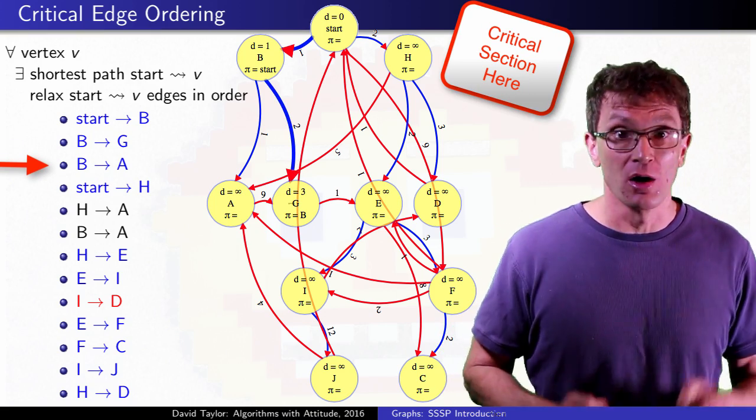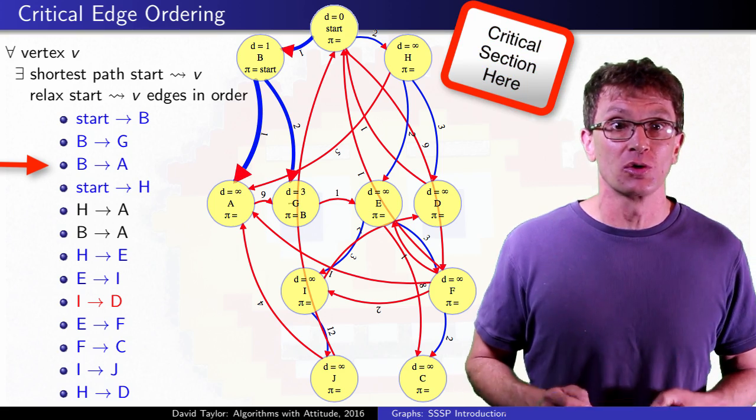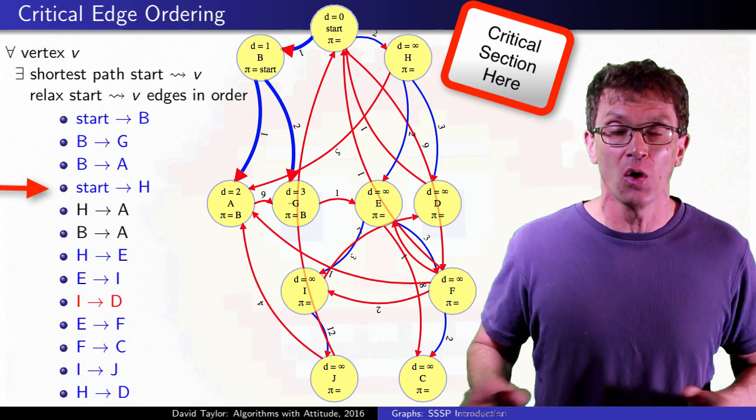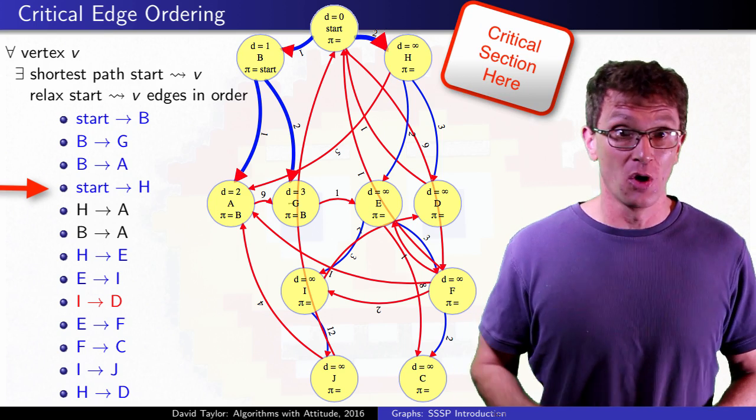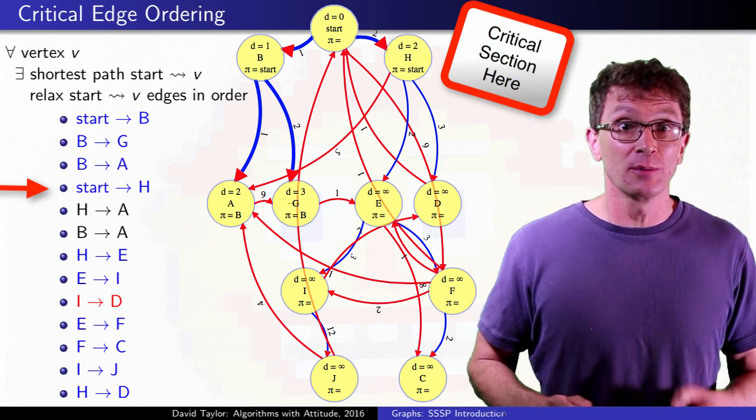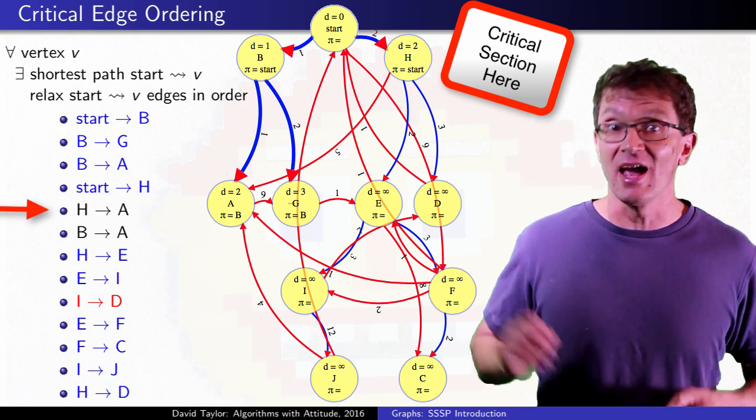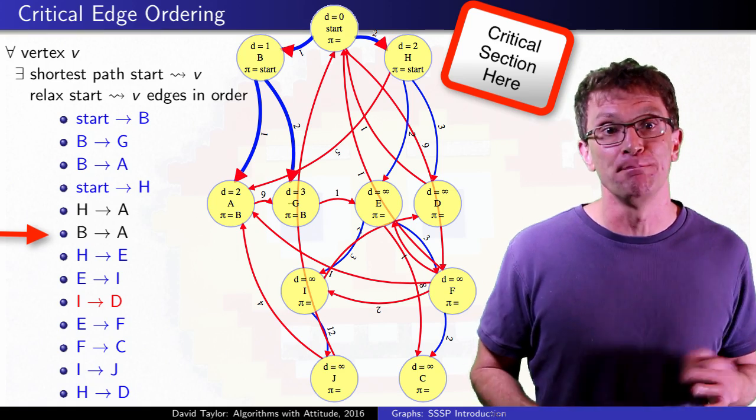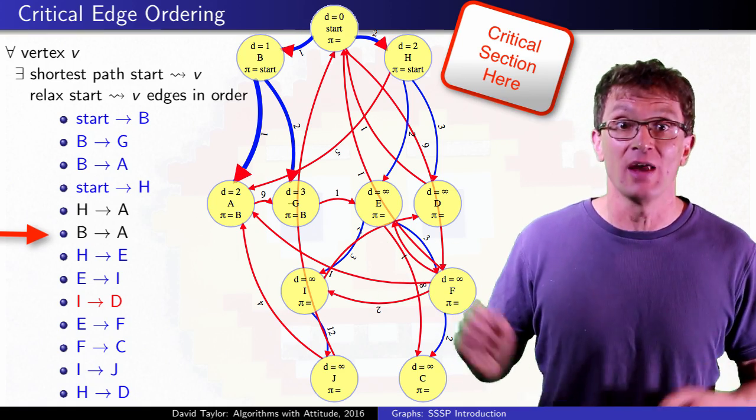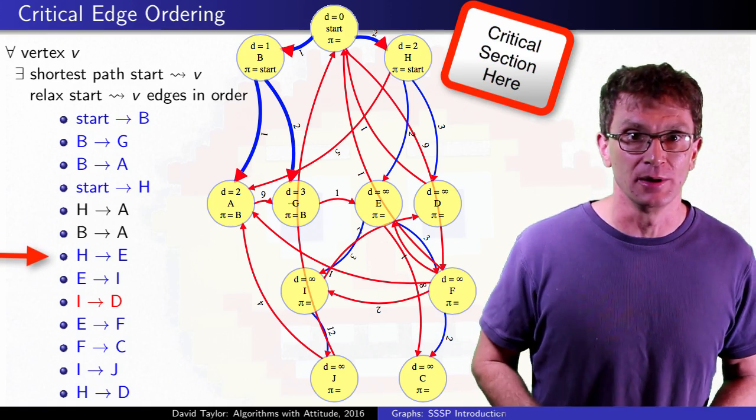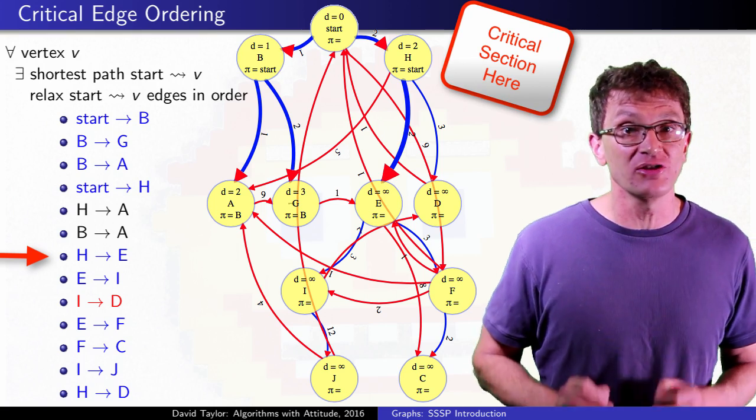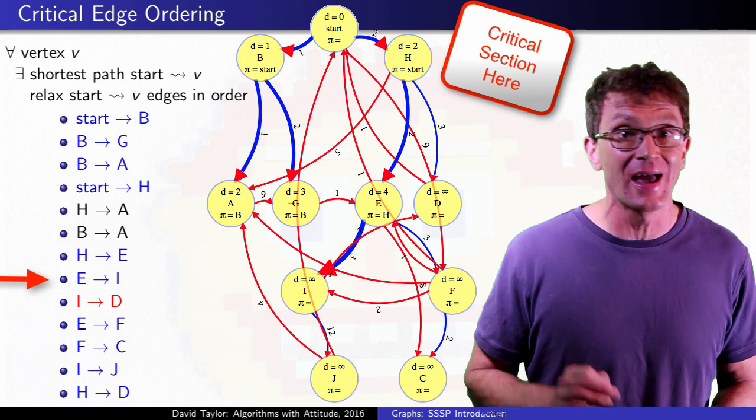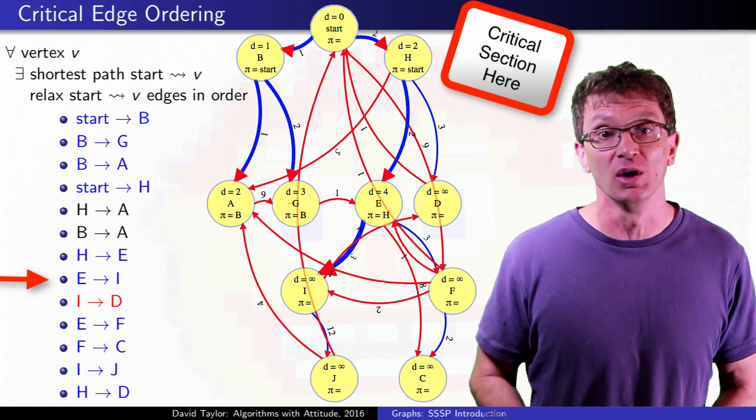If we knew the tree before the algorithm started, it would be really easy. You could relax the tree in any order like a breadth first search or depth first search order, ignoring all other edges. Without knowing the tree, maybe the algorithm relaxes other edges, like the HA edge, which doesn't do anything here. Or maybe it relaxes some edge twice, like the BA edge, which doesn't happen to do anything the second time here. That extra stuff doesn't matter as long as somewhere in the sequence of relaxations is a critical edge ordering that the algorithm will hit.